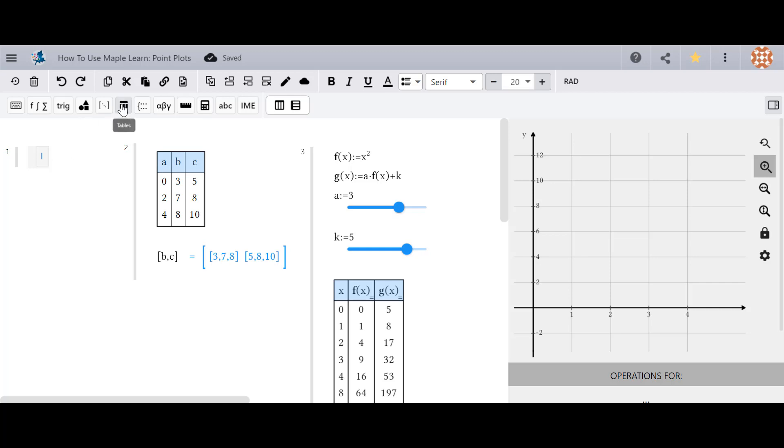Within the tables palette of the toolbar, insert a vertical table, and then you can add columns by clicking on Add Column to the right or the left.